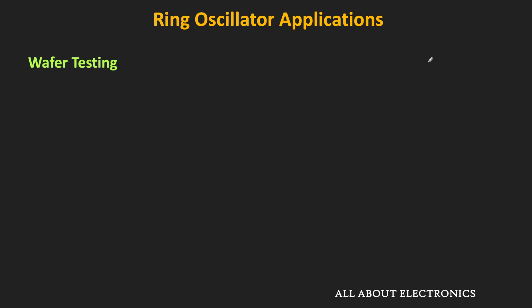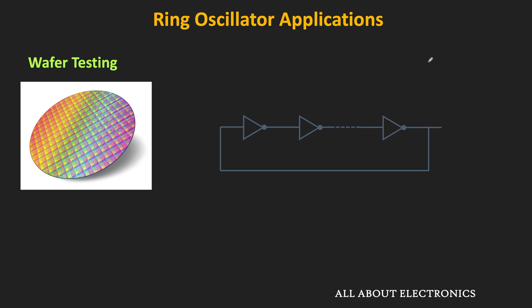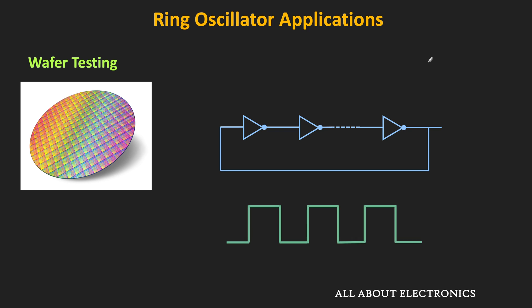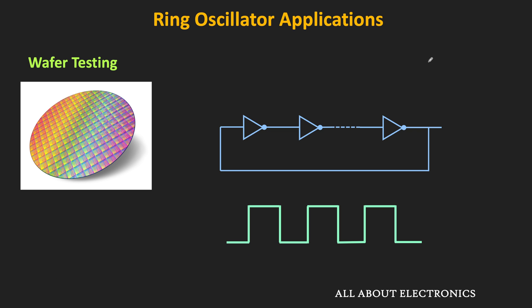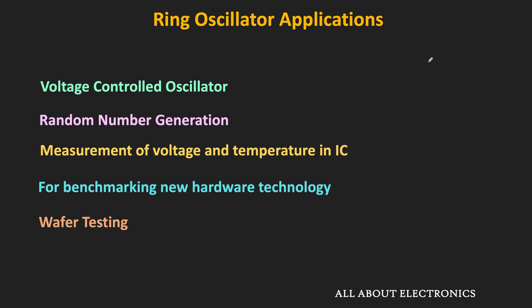Ring oscillators are also used in wafer testing. During wafer testing, ring oscillators are embedded in the wafers as test structures, allowing monitoring of various aspects of the manufacturing process. If there is a deviation in the manufacturing process, it can affect transistor behavior and hence the propagation delay of the inverter. By measuring the oscillation frequency, we can find deviations in the manufacturing process. Across the wafer, by analyzing ring oscillator frequencies, it is possible to identify variations in the manufacturing process.